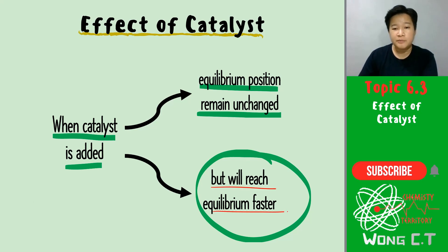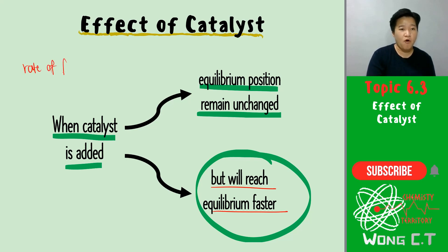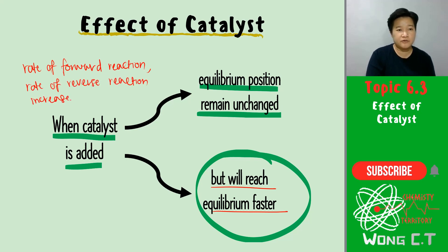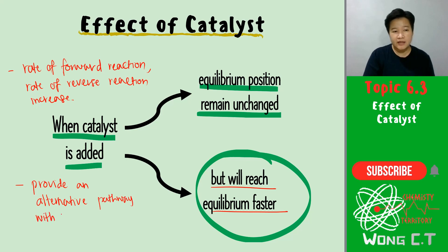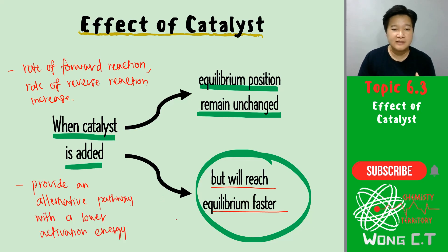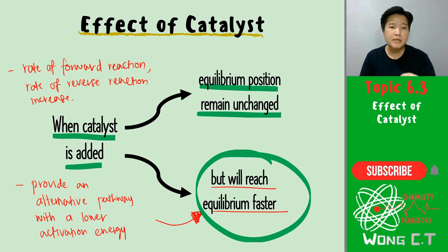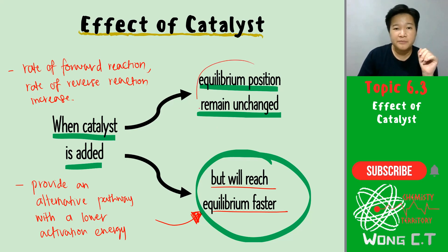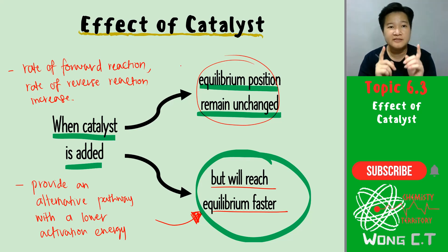And why can we reach the equilibrium much faster? Because the rate of the forward reaction and the rate of the reverse reaction both increase. Another reason is because your catalyst will provide an alternative pathway with a lower activation energy. Both of these are the reasons why your reaction will achieve equilibrium much faster when catalyst is added. But bear that in mind - equilibrium position remains unchanged.